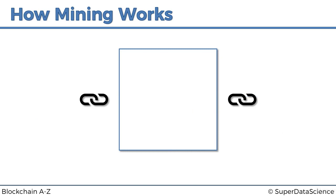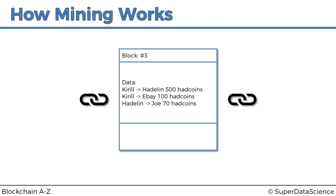Here is our block in a blockchain. As we discussed, it's got a couple of fields: the block number at the top and some data. I've put in some fake data — sent Adlan 500 ad coins, bought something on eBay for a hundred ad coins. A block doesn't store just one single transaction; a block stores multiple transactions, and then the blockchain moves on to the next one.